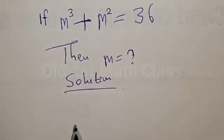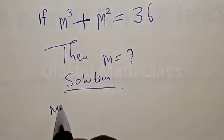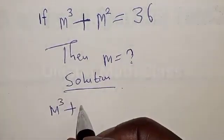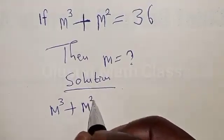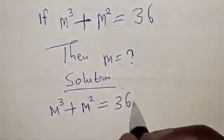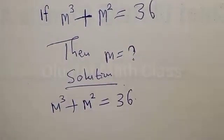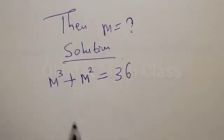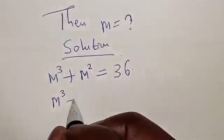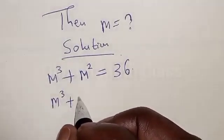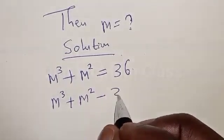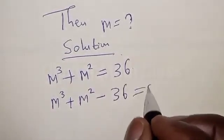We have m cubed plus m squared is equal to 36. This can be expressed as m cubed plus m squared minus 36 is equal to 0.